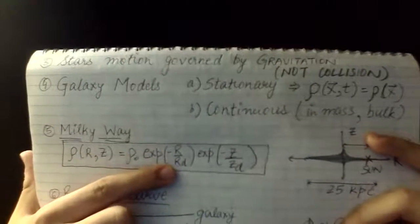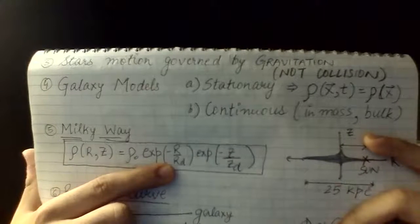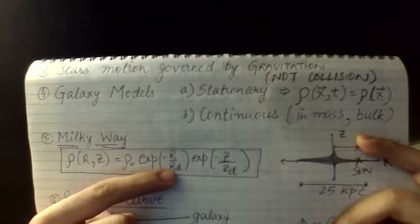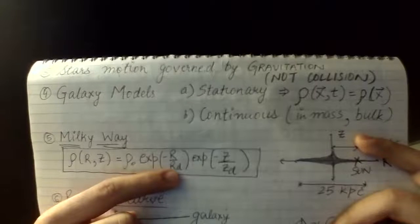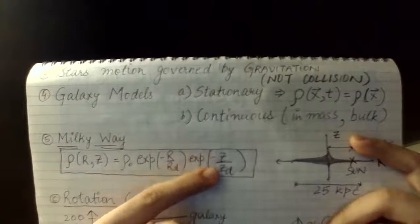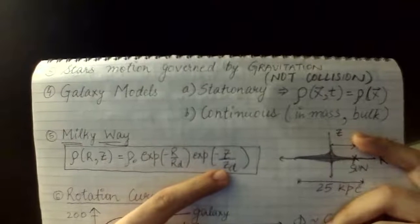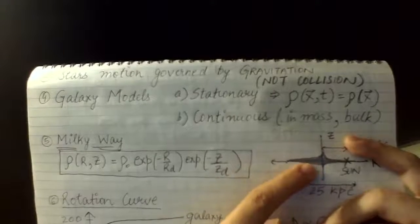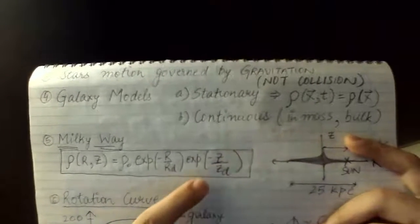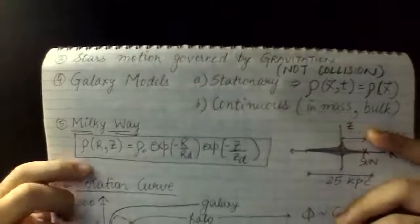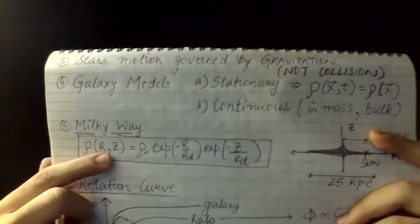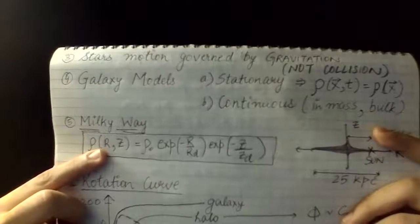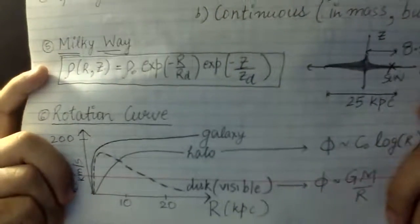The mass distribution of the galaxy in cylindrical coordinates (R and z) is given by: rho equals rho-naught times exp(-R/R_d) times exp(-z/z_d), where rho-naught is the density at the very center of the galaxy, R_d is the disc scale radius, and z_d is the disc scale height. These characteristic values set the scale of how far the galaxy is stretched in the R and z directions, and are not constant across all galaxies.